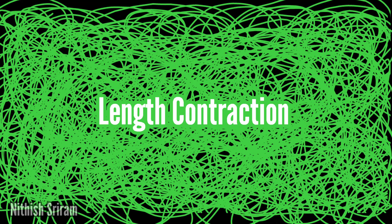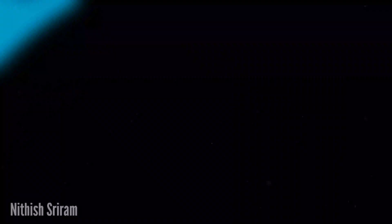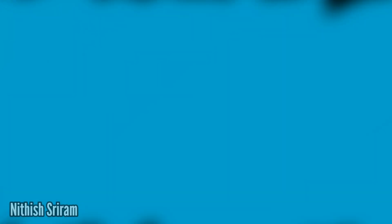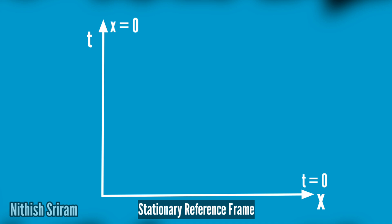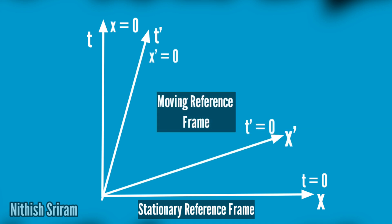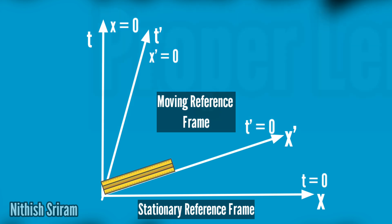This is Nitish and I post physics videos in Tamil. Now we have two reference frames. One is the stationary reference frame. In the moving reference frame, I have a 15cm scale. If you want to see that scale at rest, that scale has some velocity. This is the scale of the rest frame, and the rest frame scale measures the value of the proper length.